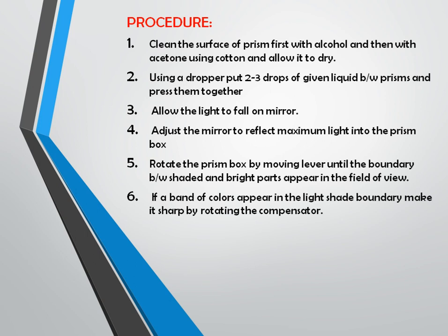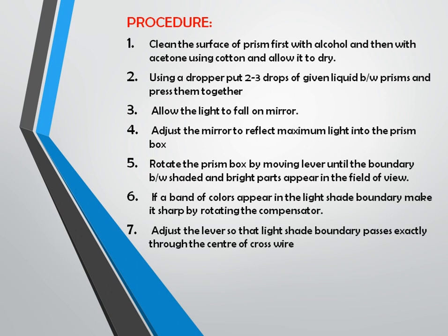After cleaning with alcohol and acetone and placing the sample drops between the two prisms, adjust the mirror for maximum light reflection, then rotate the prism and set the eyepiece view so that half is dark and half is light. For that purpose, move the rotating compensator. Then adjust the lever so that the light-dark boundary passes exactly through the center of the crosshair. Read the refractive index directly on the scale from the second eyepiece.